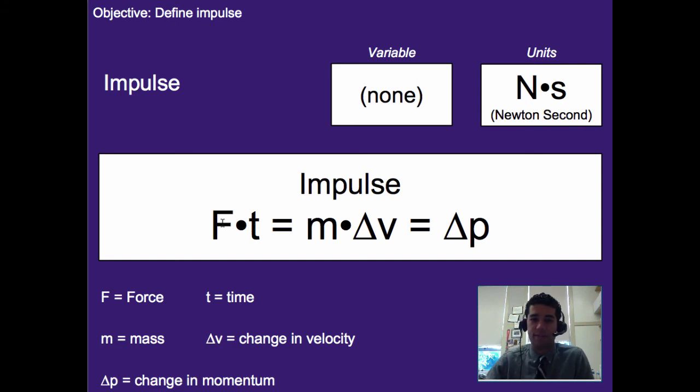so you can rearrange this to have F times t equals change in momentum, or you can have mass times change in velocity equals change in momentum, or you can equate force times time equals mass times change in velocity. All three are fine.